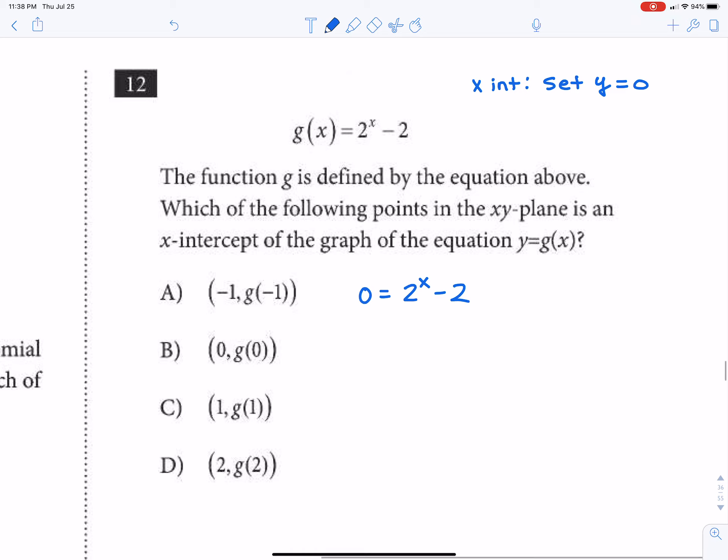That would be 2 to the x equals 2, so 2 to the x equals 2 to the first. When the bases are the same, you can just set the exponents equal to each other. So we know x equals 1, and the only answer choice for x equals 1 is C.